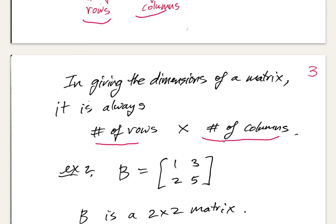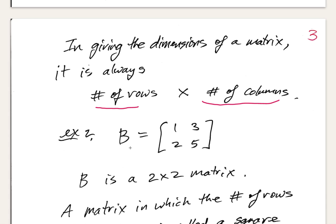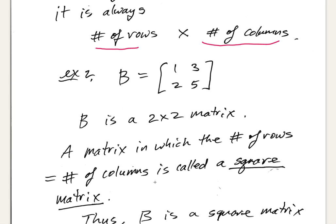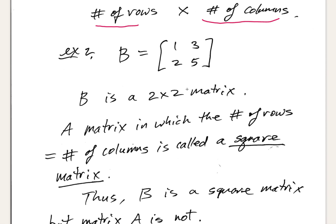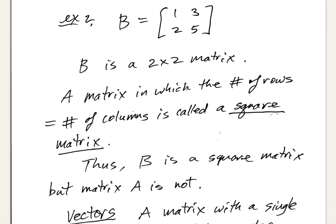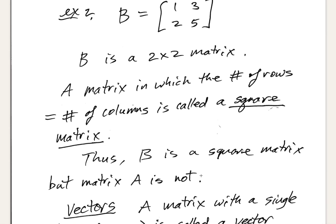If I give the name B to the matrix with entries 1, 3, 2, 5, reading across, this has two rows and two columns, so it would be a 2 by 2 matrix. A matrix in which the number of rows equals the number of columns is called a square matrix. So B is a square matrix, while A, which is 2 by 3, is not.